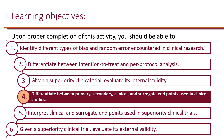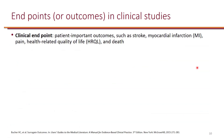Let's differentiate between primary, secondary, clinical, and surrogate endpoints used in clinical studies. As we have learned before, clinical endpoints are patient-important outcomes such as stroke, MI, pain, health-related quality of life, and mortality.